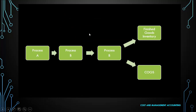In process costing, looking at a pictorial presentation, we can see that the input is introduced in process A along with direct material, overheads, and labor. The output of process A is transferred to process B, where again material, labor, and overheads may be introduced. The output of process B may be partly transferred further. Similarly, the output of process B will become the finished goods, and if sold, it becomes the cost of goods sold.